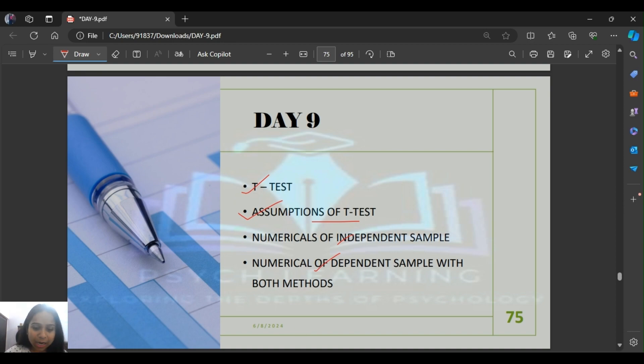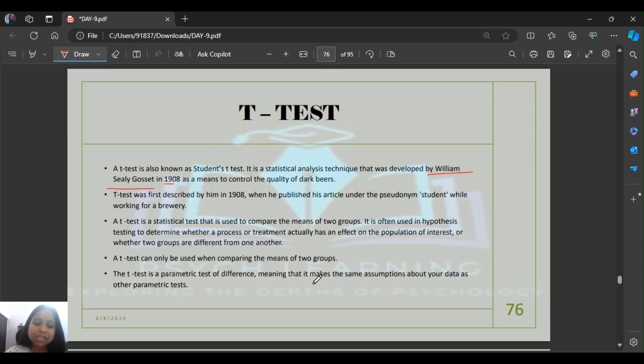First, what is a T-test? T-test is also known as Student's T-test. It was developed by William Stanley Gossett in 1908. He published his article under the pseudonym 'Student' because it was used for quality control of dark beers. T-test is used to compare the means of two groups.